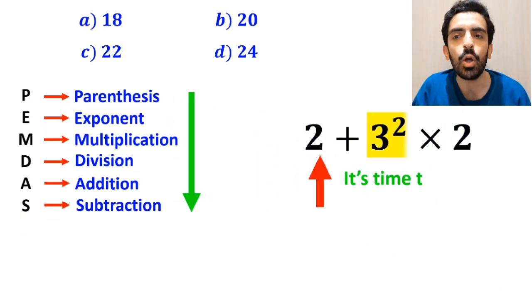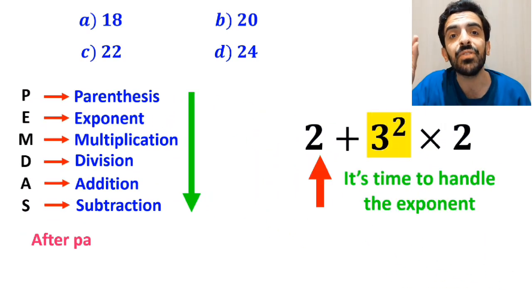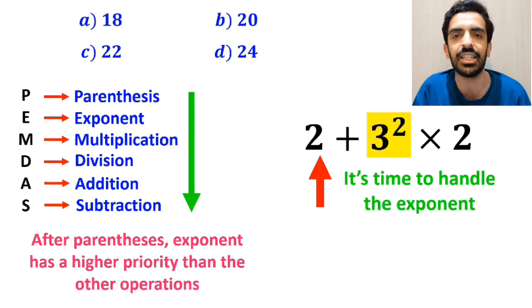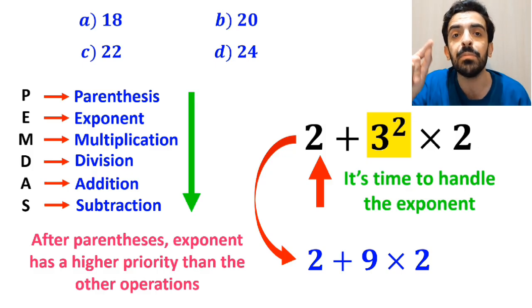And the next step, it's time to handle the exponent, because after parenthesis, exponent has a higher priority than the other operations. So we write this expression as 2 plus 9, then times 2.